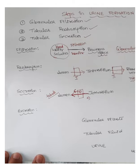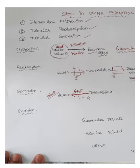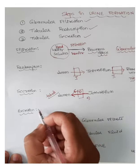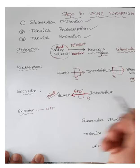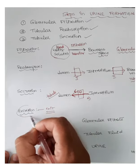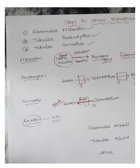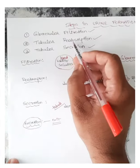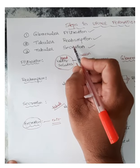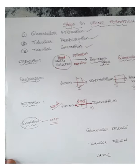After the processes of filtration, reabsorption, and secretion in the glomerulus and in the tubules, the waste substances or those which are not reabsorbed and those which are secreted out are excreted — they exit from the body, which is referred to as excretion. By these three processes — glomerular filtration, tubular reabsorption, and tubular secretion — there will be formation of urine.